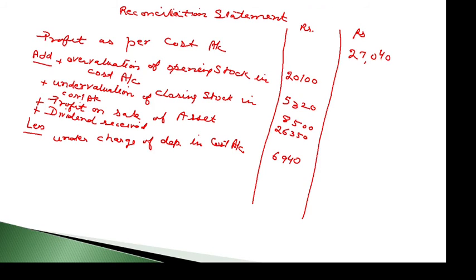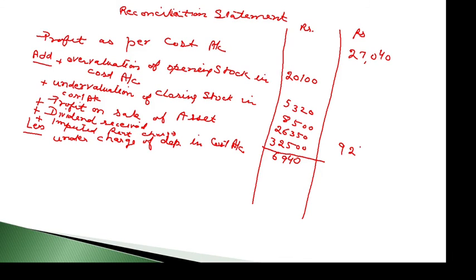Next entry is imputed rent charged. This is a nominal rent that is shown only in cost accounts and not in financial accounts. Since it was charged on the debit side in cost accounts but not in financial accounts, the profit in cost accounts is lower. So we need to add it back. We add imputed rent charged to the additions column. The total of the additions column comes to 92,770. Adding this gives us 1,19,810. We then deduct the deductions column total of 6,940.